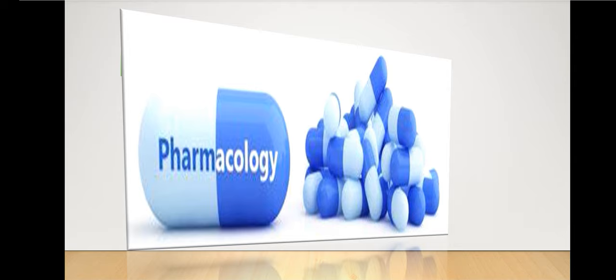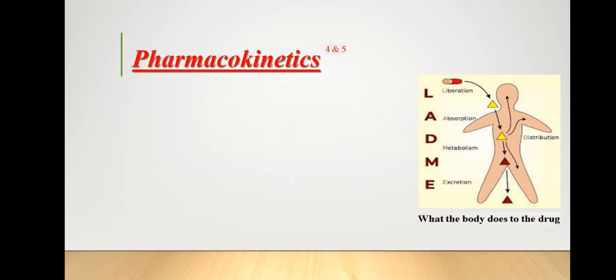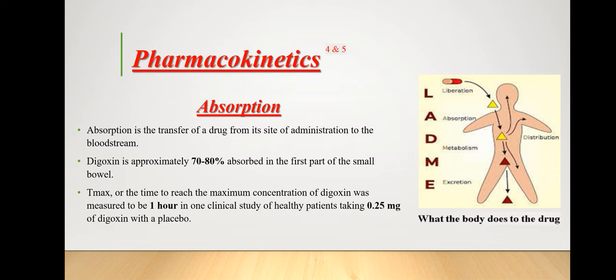Pharmacokinetics is the action or behavior of the body toward the drug, or the movement of drug within the living system. In a single sentence, it can be described as what the body does to the drug. It comprises the following steps: absorption, distribution, metabolism, and excretion.